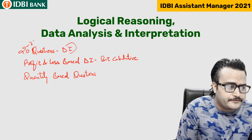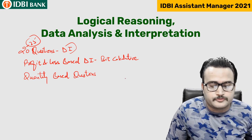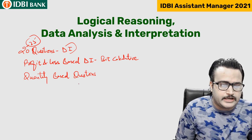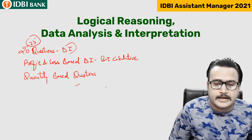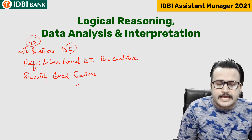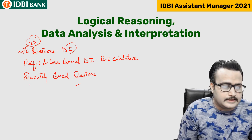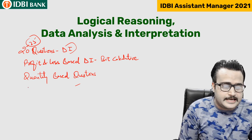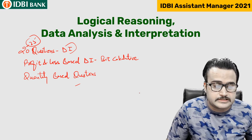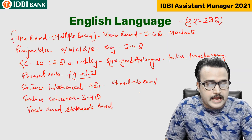Apart from these, around 20 to 25 questions from DI. Profit and loss based DI was there, which was a bit calculative. Quantity-based questions were also there. One or more DI sets were also there that I couldn't get full details on — please let me know in the comment section box which type of DI were there.